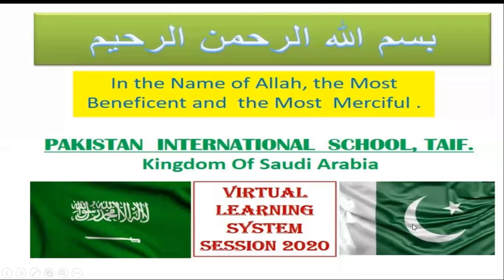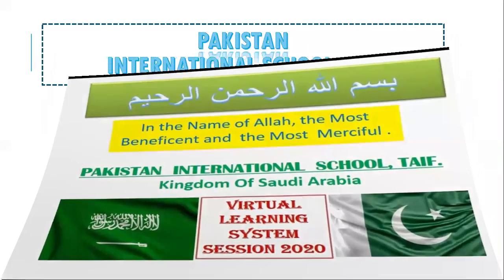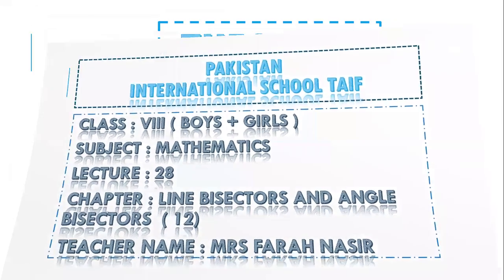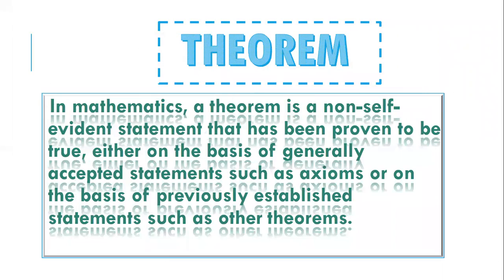Bismillahirrahmanirrahim — in the name of Allah, the most beneficent and the most merciful. This is lecture 28 of math about theorems, chapter 12. Before starting the theorem, let us see what a theorem is. In mathematics, a theorem is a non-self-evident statement that has been proven to be true, either on the basis of generally accepted statements such as axioms, or on the basis of previously established statements such as other theorems. It means the statement of the theorem will always be true and we will prove them by giving reasons.